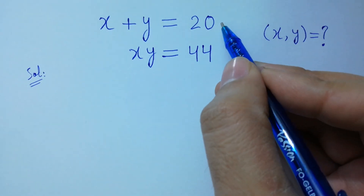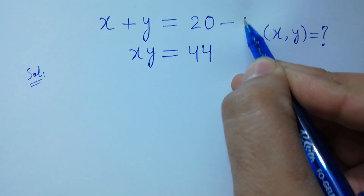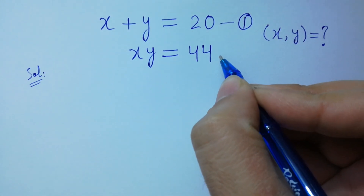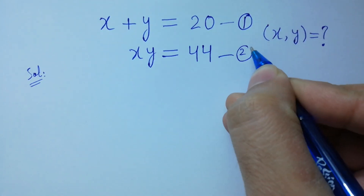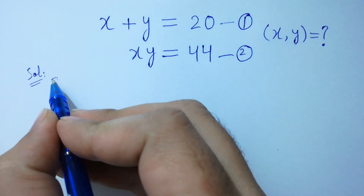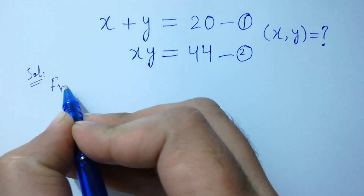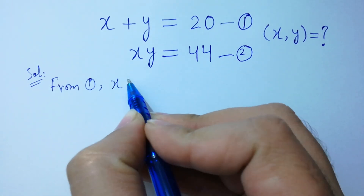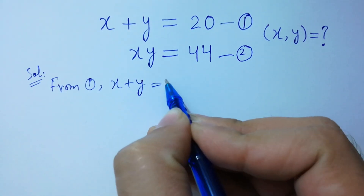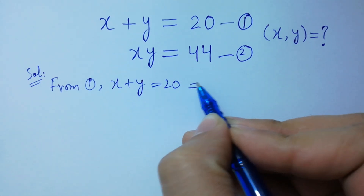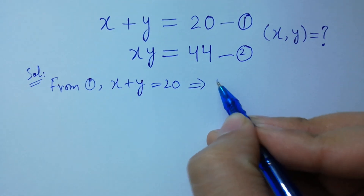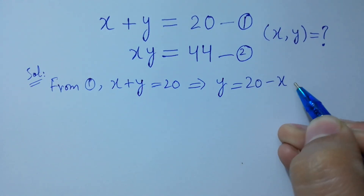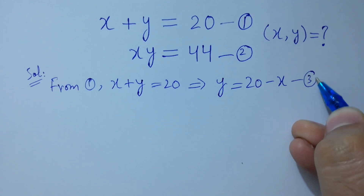Suppose x plus y equal to 20 is the first equation, and x times y equal to 44 is the second equation. From the first equation, x plus y equal to 20, we get y equal to 20 minus x. Suppose this is the third equation.